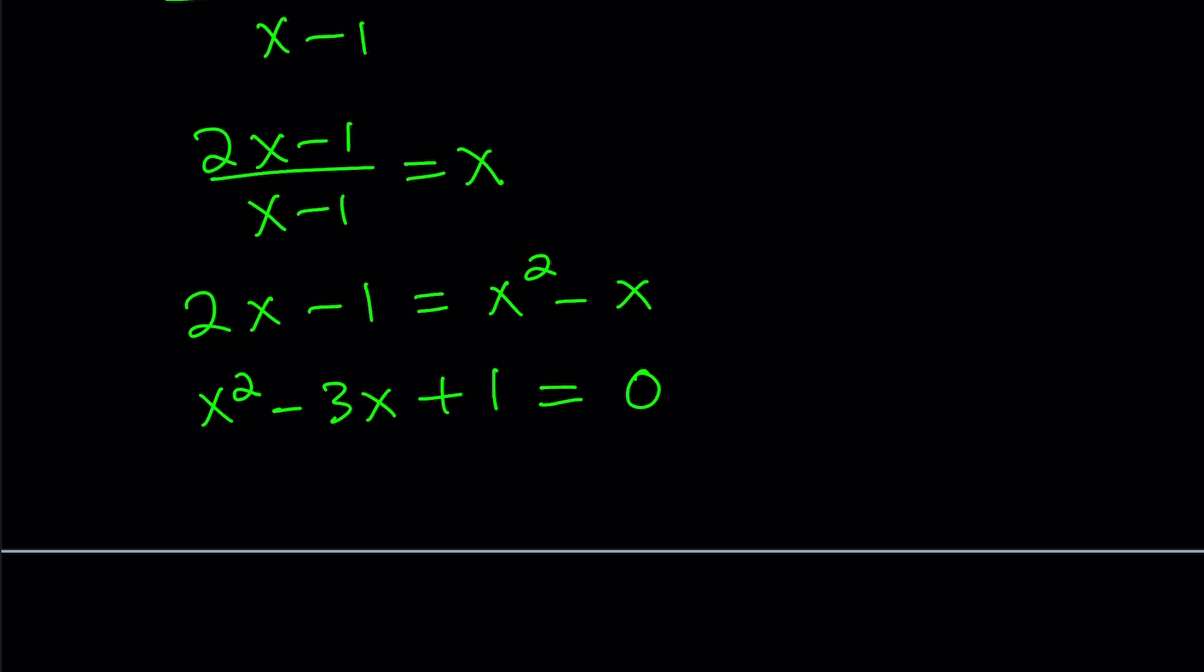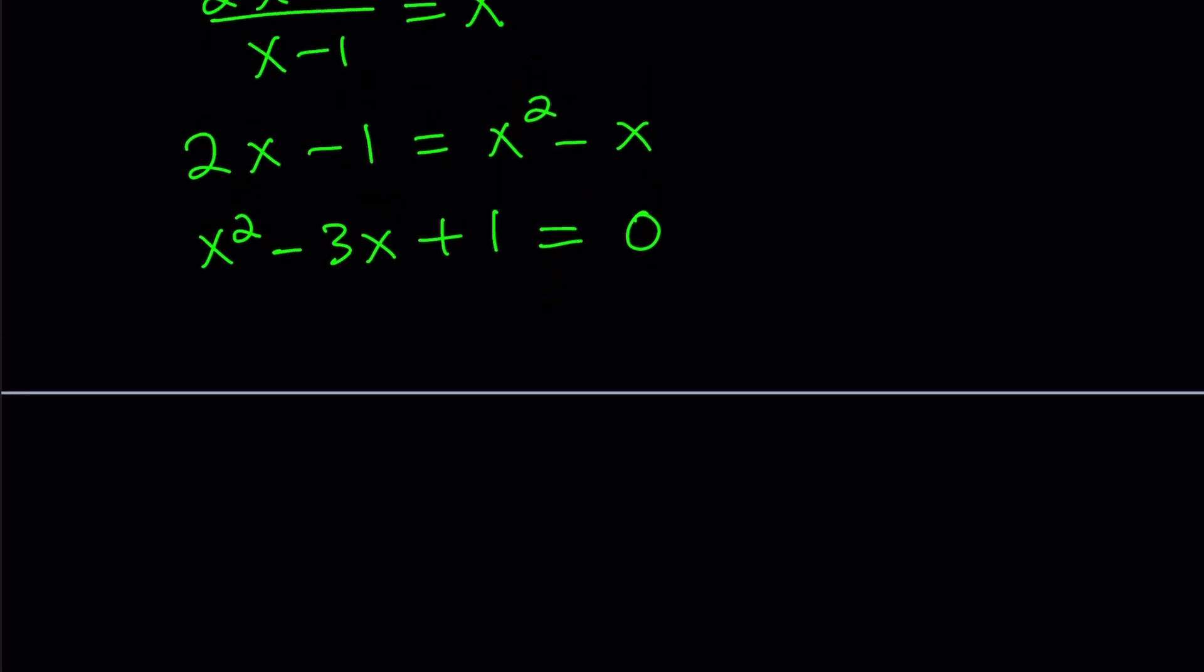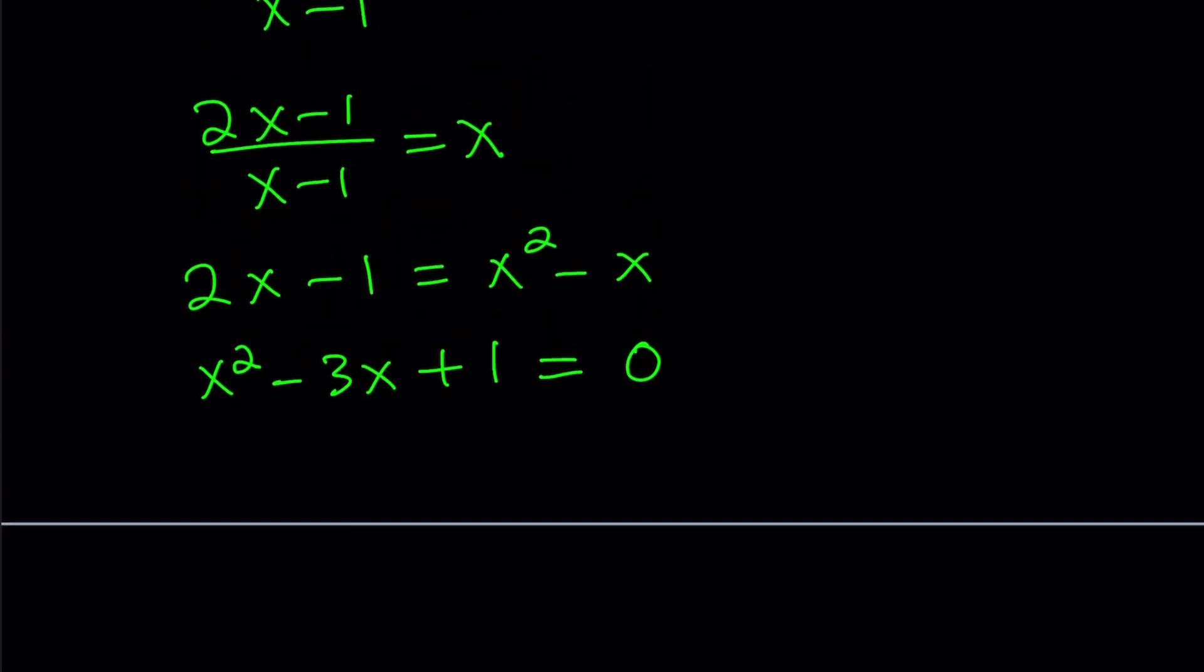So that's the quadratic equation. This quadratic equation has two solutions. Let's find them by using the quadratic formula. The quadratic formula gives us x equals negative b plus minus the square root of b squared minus 4ac over 2a. And our equation is ax squared plus bx plus c equals 0. In this case a is equal to 1. Negative b is the opposite of the coefficient of x which is 3 in this case.